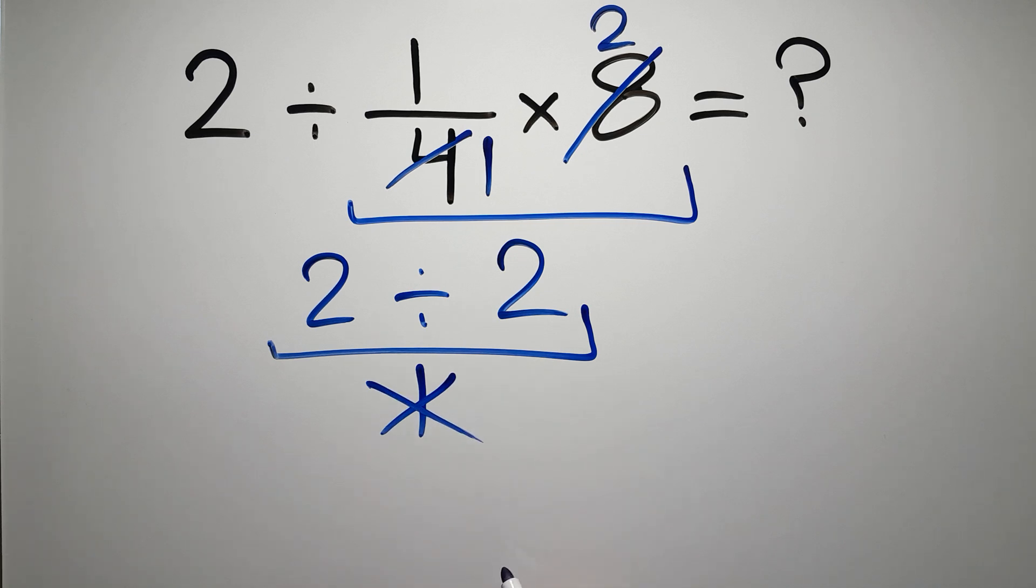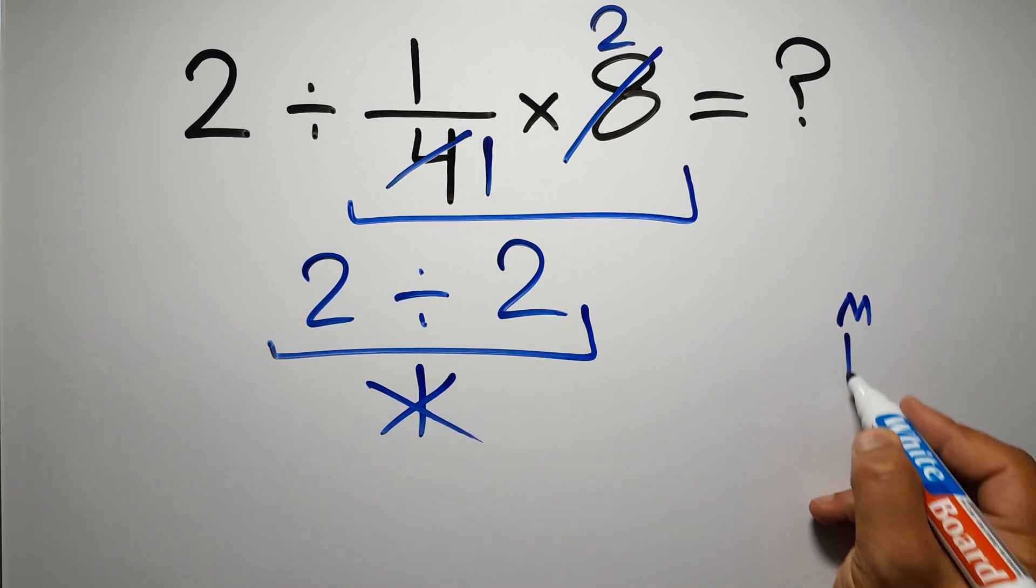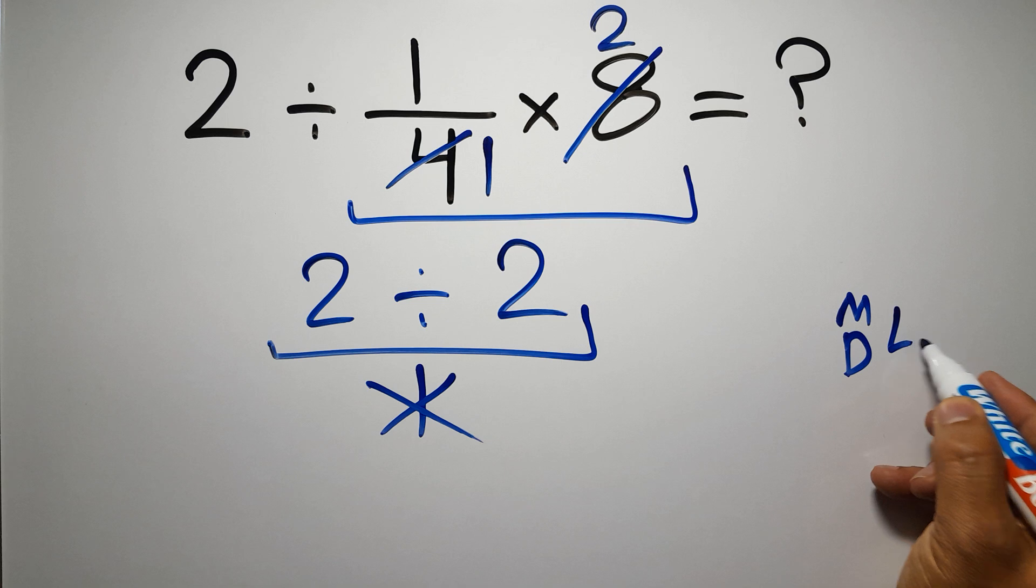Because according to the order of operations, multiplication and division have equal priority and we have to work from left to right.